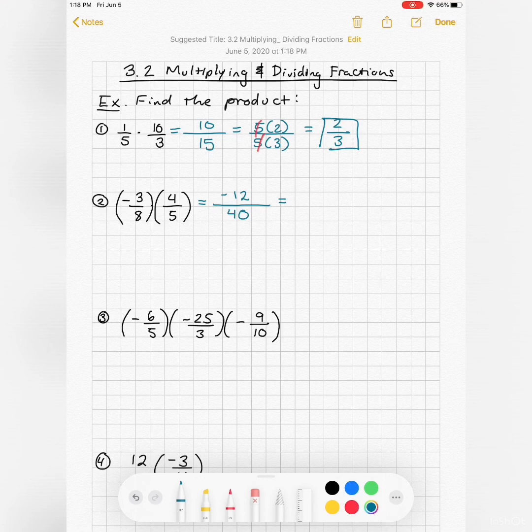So then I can divide top and bottom both by four. 12 divided by four is three, 40 divided by four is 10.